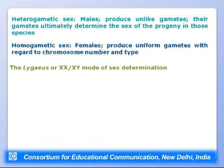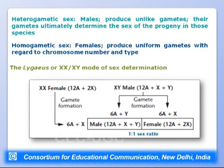Wilson working on the lygus milkweed bug found it also follows XX/XY sex determination: females have 12 autosomes plus 2X, producing haploid gametes of 6 autosomes plus X. Males are XY, similar to the human XX/XY system. Males and females are produced in a 1:1 sex ratio.